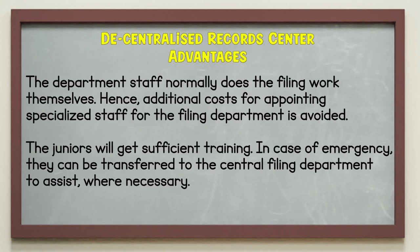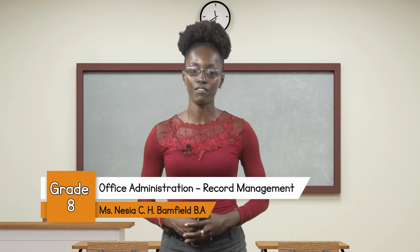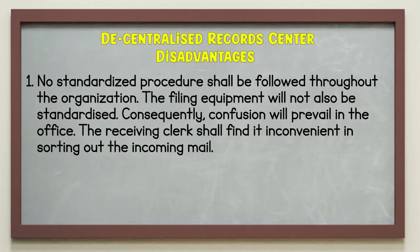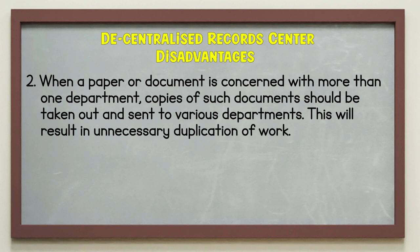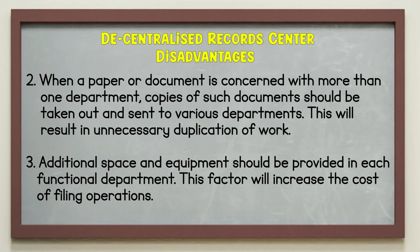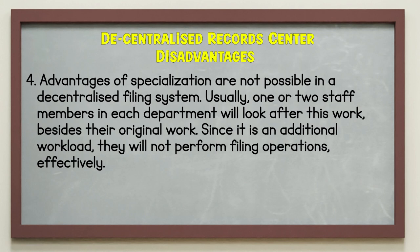The decentralized record center disadvantages. 1. No standardized procedure shall be followed throughout the organization, and filing equipment will not be standardized. Consequently, confusion will prevail in the office and the receiving clerk shall find it inconvenient in sorting out incoming mail. 2. When a paper or document is concerned with more than one department, copies should be taken out and sent to various departments, resulting in unnecessary duplication of work. 3. Additional space and equipment must be provided in each functional department, which will increase the cost of filing operations.